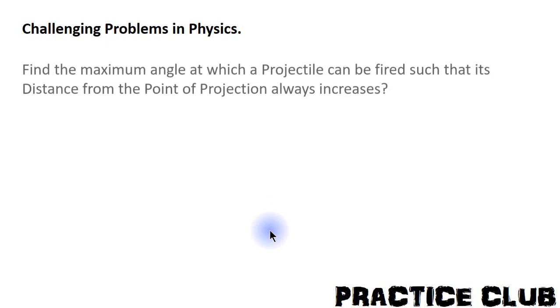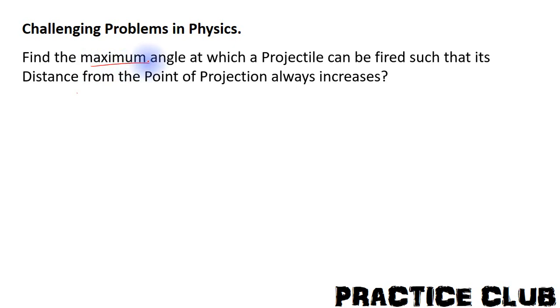Hello guys, so this will be our first challenging problem. Find the maximum angle at which a projectile can be fired such that its distance from the point of projection always increases. That is, let us say if we fire a projectile from a point, this is the point of projection, and we want the maximum angle up to which the